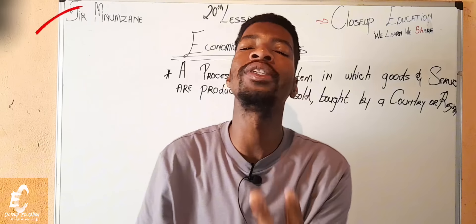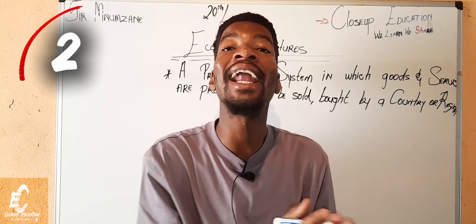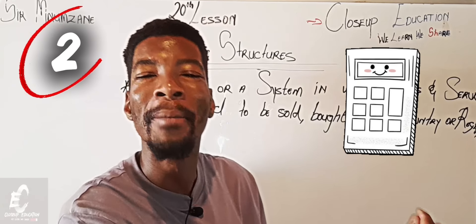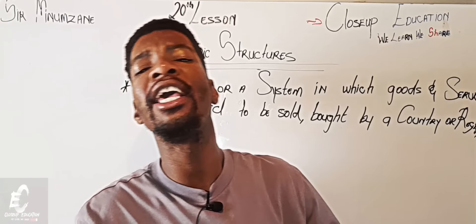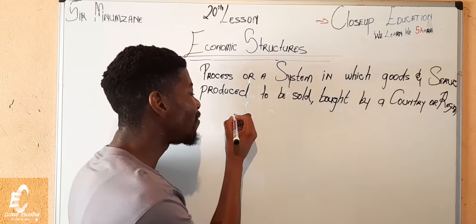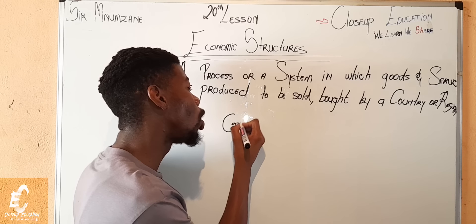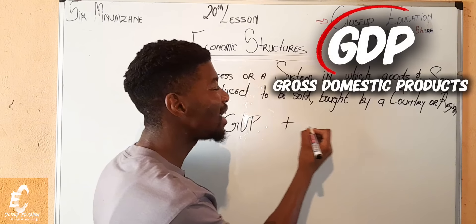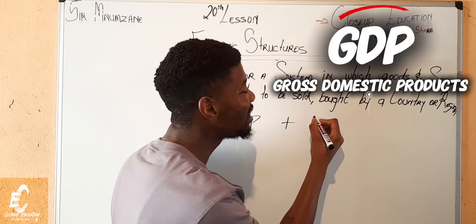This is where the two systems that are used to calculate the economy are actually introduced. The systems are called the GDP and the GNP.